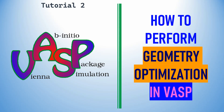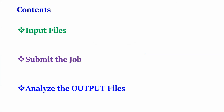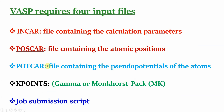In this video, I am going to explain how to perform geometry optimization using VASP code. The content covers input files, submitting the job, and analyzing the output file. VASP mainly requires four input files: the INCAR file containing calculation parameters, the POSCAR file containing atomic positions, the POTCAR file containing the pseudopotential of the atom, and the KPOINTS file.